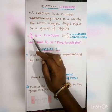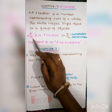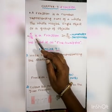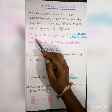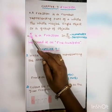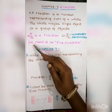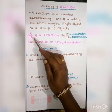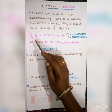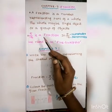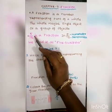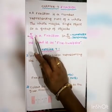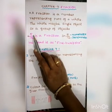A fraction has a numerator and a denominator. For example, 5 by 12 is a fraction. We read it as 5 by 12.